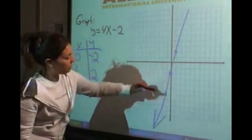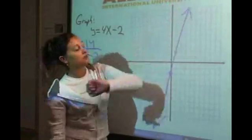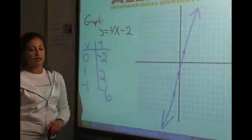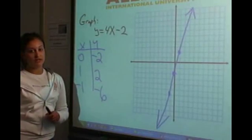Let's draw a line through there. Put our arrows so that we know that it's going on for infinity, and you have graphed your line.